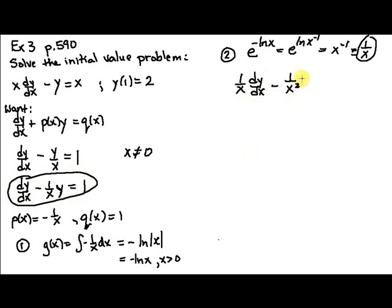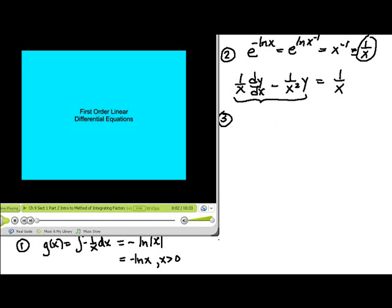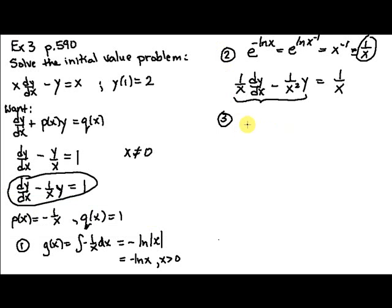Now step 3, reverse the product rule here. We're going to have the derivative of the product, 1 over x times y. Now let's double check. The first times the derivative of the second, plus the second, which is y, times the derivative of the first. And the derivative of x to the negative 1 is negative x to the negative 2. So we're in good shape here.